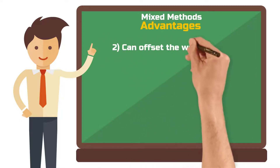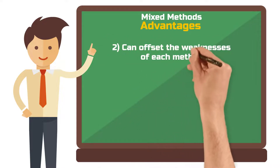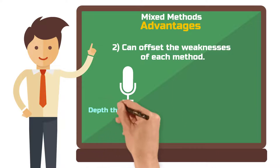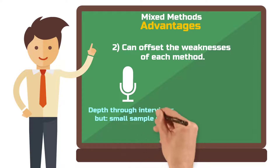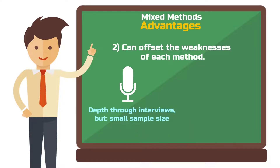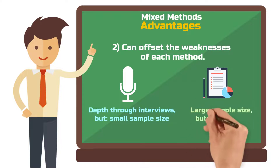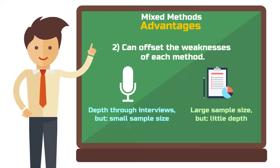Mixed methods can also offset the weaknesses of each method. For example, qualitative interviews can add depth to a scientific study, but often only a small sample of experts can be interviewed. If you additionally send a quantitative online survey based on your interview findings to many more people, you achieve the breadth that a purely qualitative study couldn't provide. This could, for example, increase the statistical generalizability of your findings. The argument works in reverse as well.